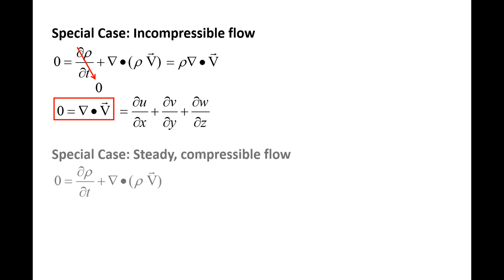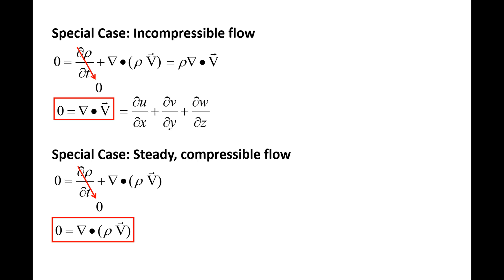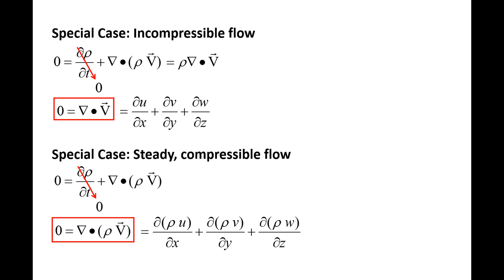The second special case is steady, compressible flow. For steady flows, the density field is constant in time, so the time rate of change of density is equal to zero. However, density may vary in space, so we cannot pull density out of the dot product. The continuity equation becomes the divergence of rho times velocity equals zero. Expanding this term, we obtain partial (rho u) partial x plus partial (rho v) partial y plus partial (rho w) partial z is equal to zero.